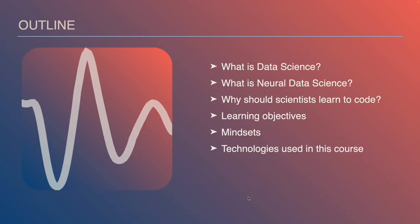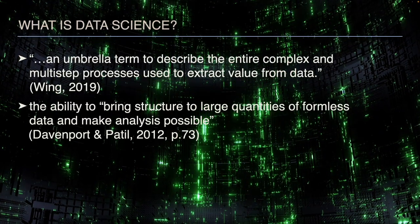The basic outline for this lecture is: what is data science, what is neural data science, why should scientists even learn to code, and then the overall learning objectives for the course, the mindsets to engage with, and the technologies used in this course.